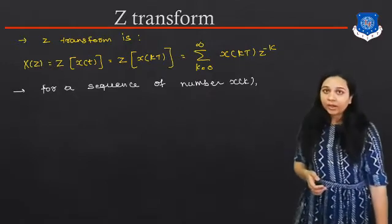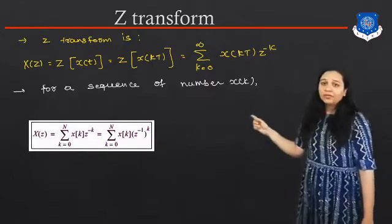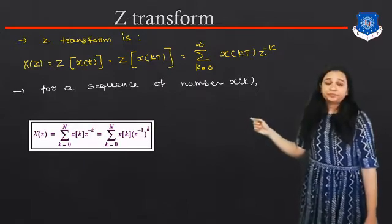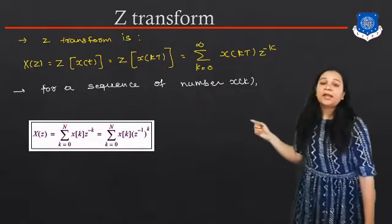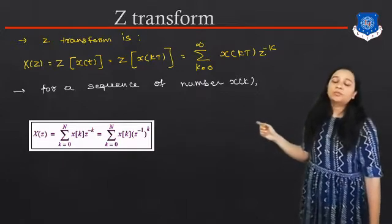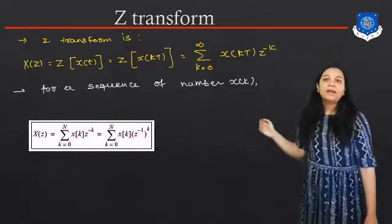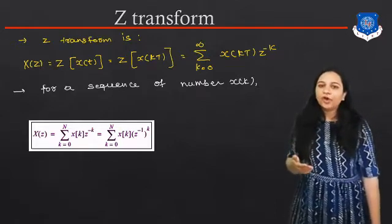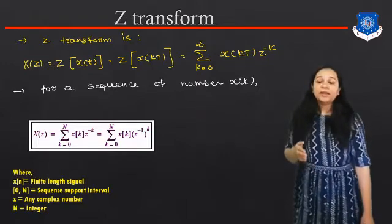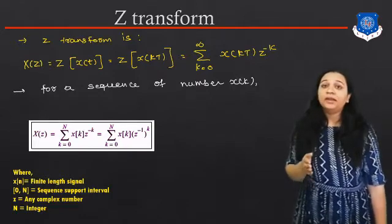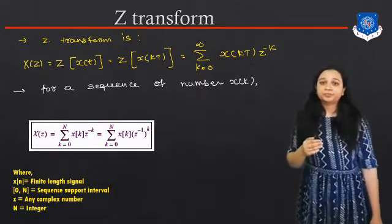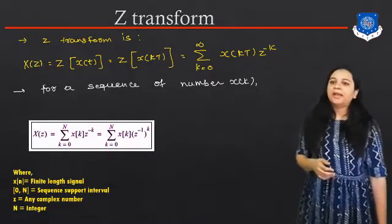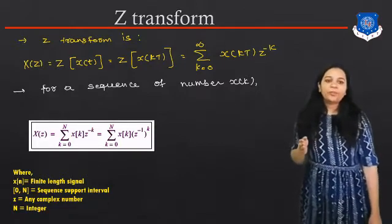For a sequence of numbers X(K), the standard equation of the Z-Transform is: X(Z) equals the summation of K from 0 to N of X(K) · Z raised to minus K. This equals the summation from K = 0 to N of X(K) · (Z raised to minus 1) raised to K. We change the value of K to find different Z-Transforms. Here X(N) is a finite integral signal, Z is any complex number, and N is an integer.